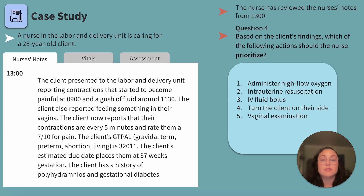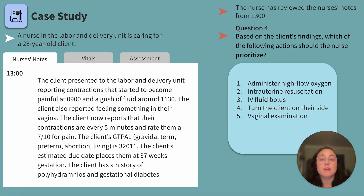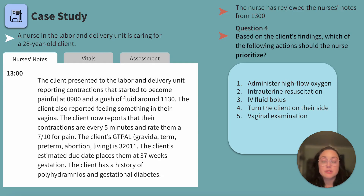There are a lot of actions being taken before a confirmed condition. This case study is a great example of how you'll prioritize hypotheses and actions for your clients as a real nurse. After suspecting a prolapsed cord, which of the following should the nurse prioritize? Administer high-flow oxygen, intrauterine resuscitation, IV fluid bolus, turn the client on their side, or vaginal examination? Take a second to pause and answer.